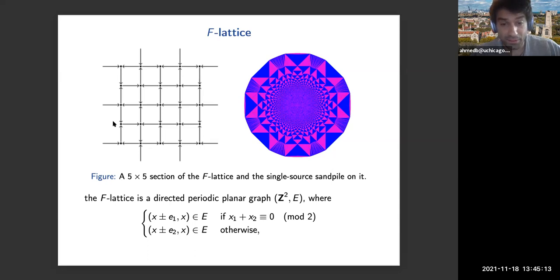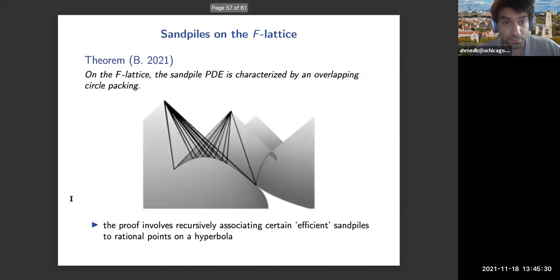Their proof doesn't apply to this example—the F-lattice is a periodic subgraph of the square lattice. This is a five by five section here. On the right here is the single source sandpile on the F-lattice, and it looks different qualitatively. I actually characterized the limit PDE in this case by a different circle packing, by a certain overlapping circle packing that's not Apollonian. The proof involves constructing certain efficient sandpiles for each rational point on a hyperbola.